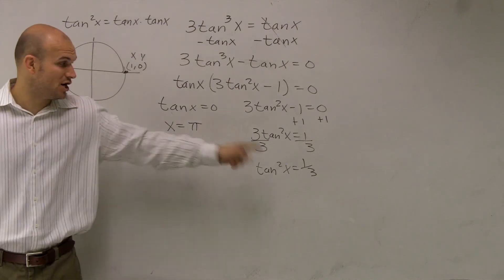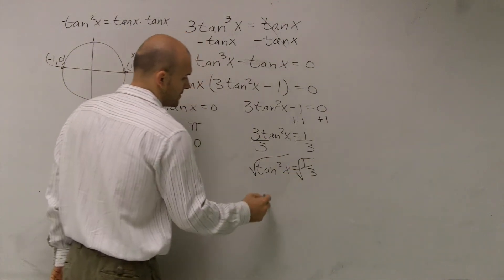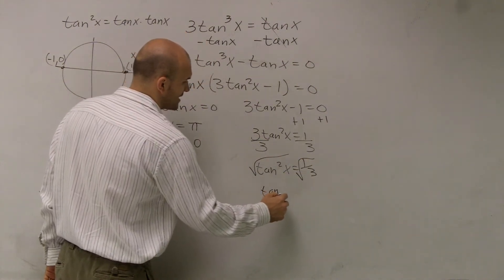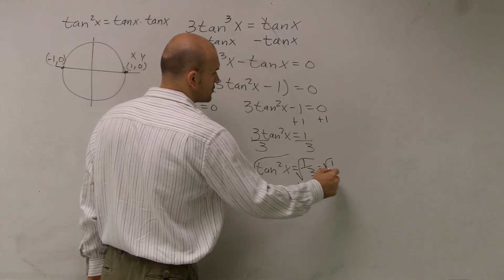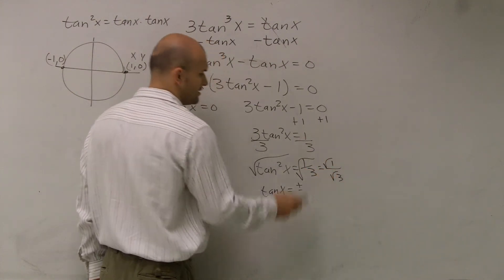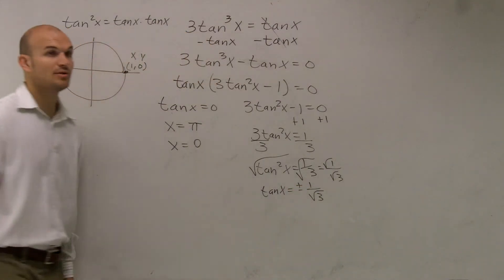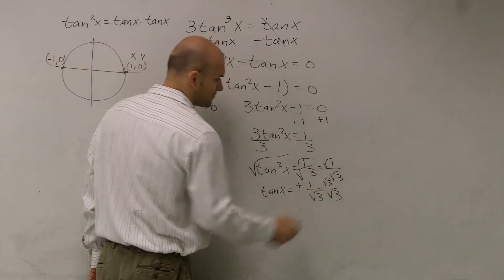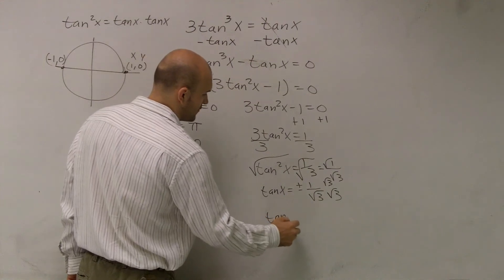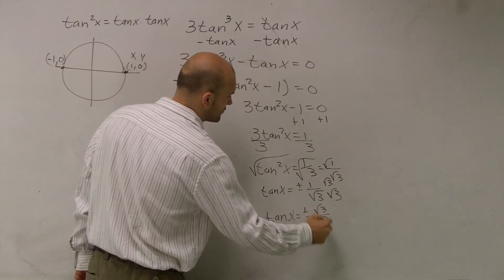Yeah. Now I need to undo that tangent square. So I need to square root. So I get tangent of x equals plus or minus. Remember, this equals square root of 1 over square root of 3. So that's going to be 1 over radical 3. Plus or minus, right? We took the square root. Now I'm going to rationalize the top and the bottom. So my final answer is tangent of x equals plus or minus radical 3 over 3.